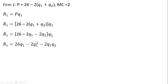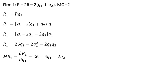Multiplying Q₁ throughout what's in brackets, we get this expression. Our next step is to find marginal revenue for firm 1, which is the partial derivative of the revenue function with respect to firm 1's output. So 26 Q₁ becomes 26, minus 2Q₁² simplifies to minus 4Q₁, and the partial derivative of the last term with respect to Q₁ leaves us with minus 2Q₂.